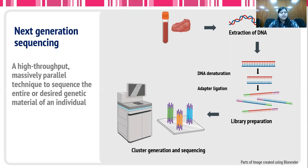Cluster generation happens on certain glass chips known as flow cells. On flow cells, the clusters are generated and through bridge amplification, multiple copies of sequence are generated. This is then followed by sequencing using sequencers — under Illumina, for example, there are different sequencers of different throughput and different time durations.